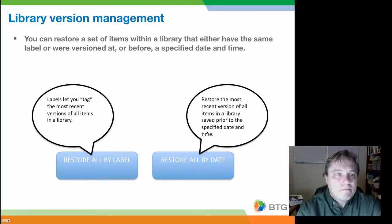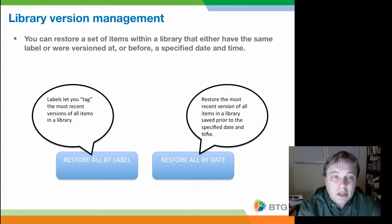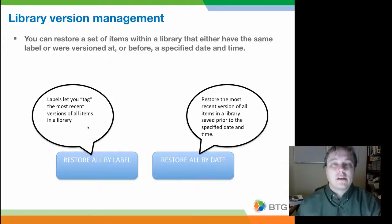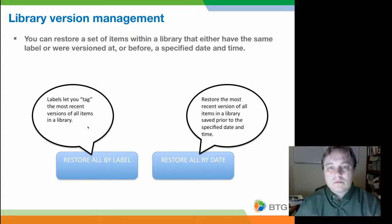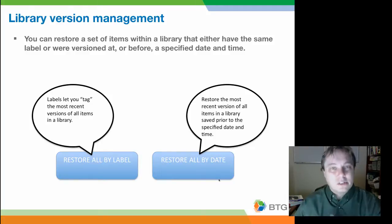Another thing you can do is get some extra benefits around version management in the library. You can restore a set of items within a library that either have the same label — as I showed you in the user interface — or you can restore items that were versioned at or before a specific date and time. With a library, I can go in and tag all the latest versions of everything in the library at a point in time, and then restore the library from that tag. Similarly, you can restore everything by date, getting all the latest versions in the version history of all items prior to the specified date and time.